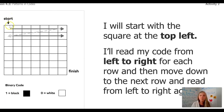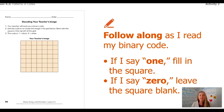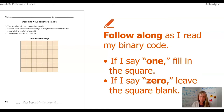I will start in the top left-hand corner and go left to right with my code, just like we read — left to right — and then start back to the left again, line by line. The ones are going to be black or shaded in, and the zeros will be white — leave them blank. Follow along as I read my binary code. If I say 1, fill it in. If I say 0, leave it blank. I'll also use my fingers so you get a visual. Are you ready? Here we go.